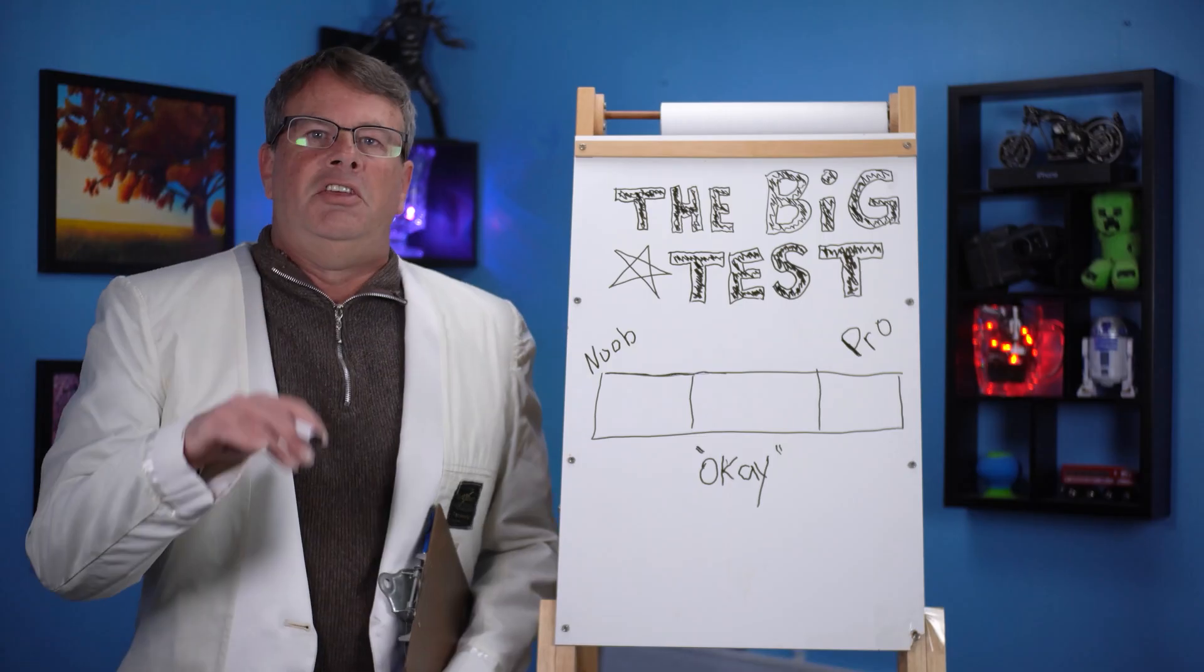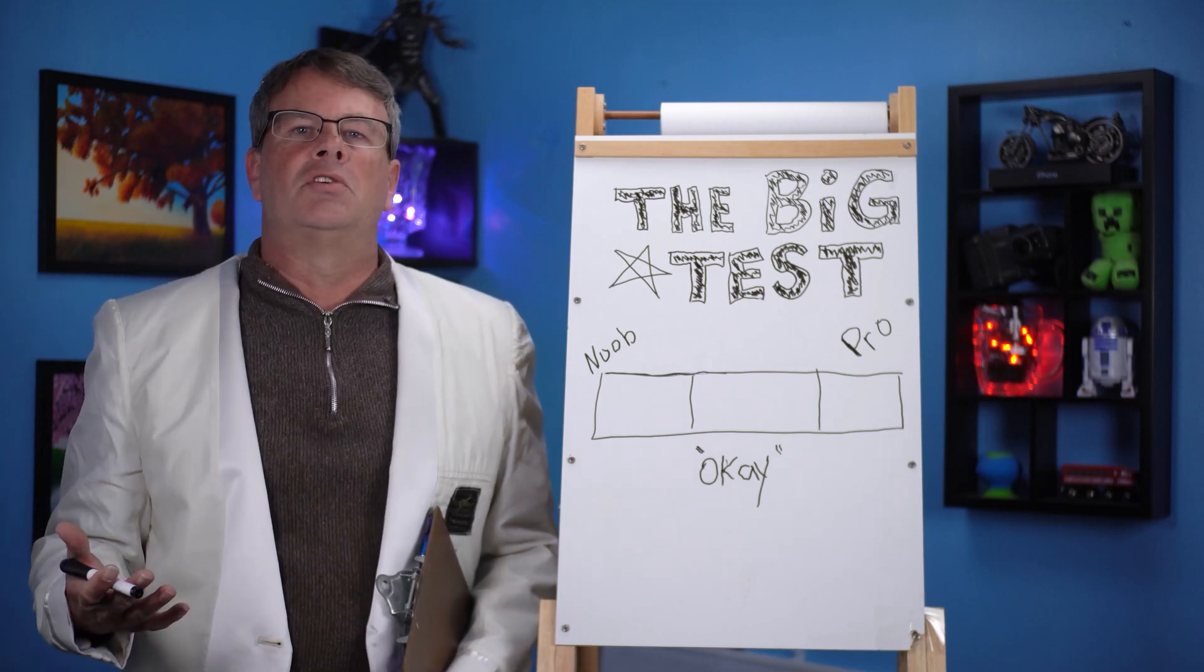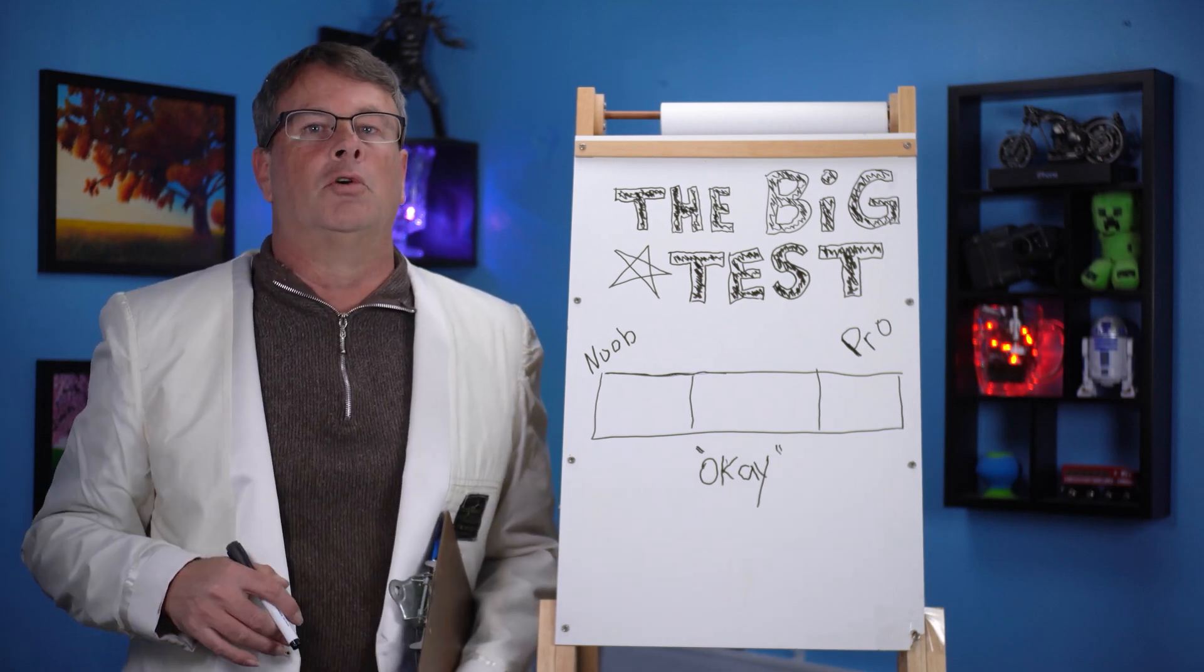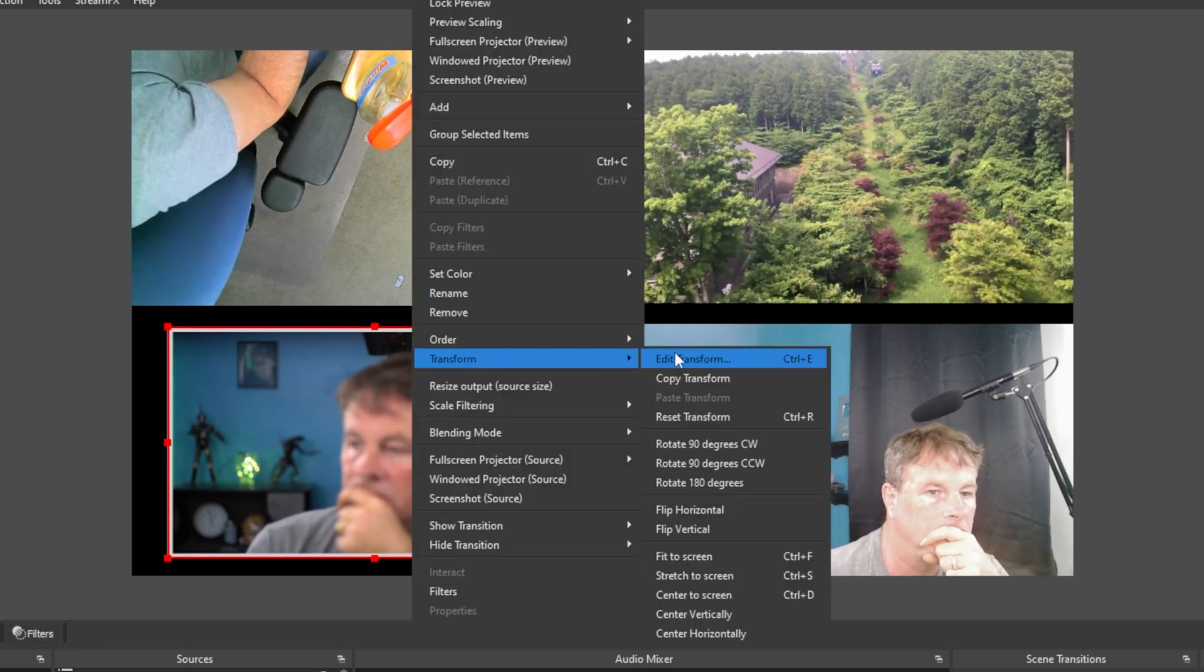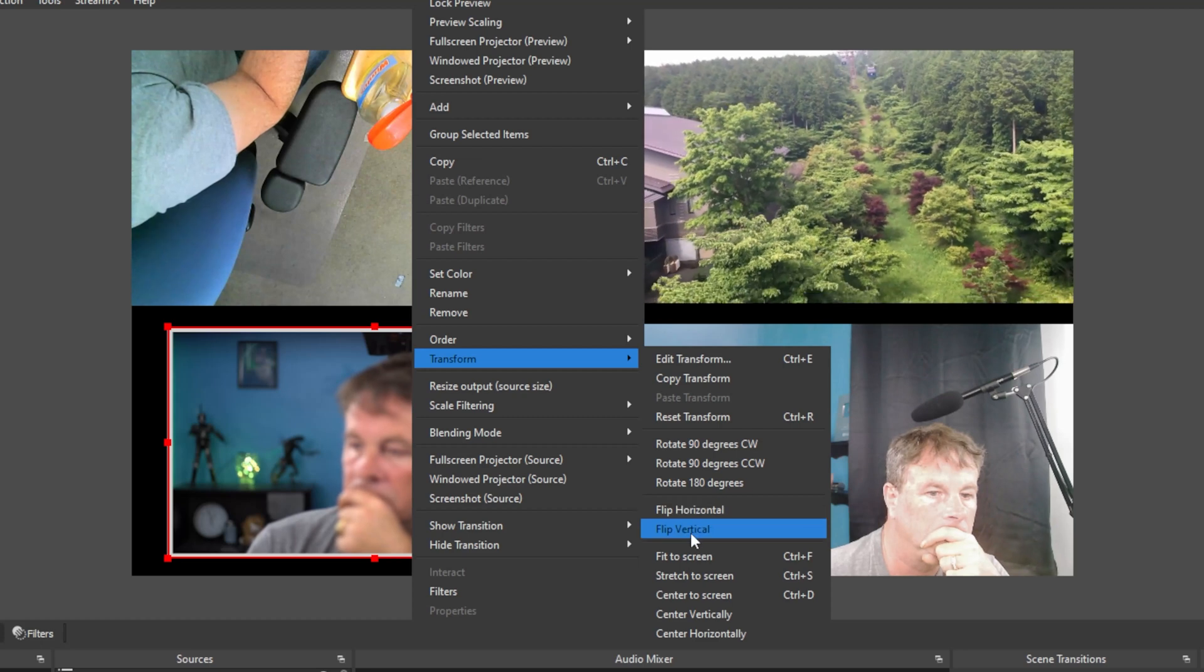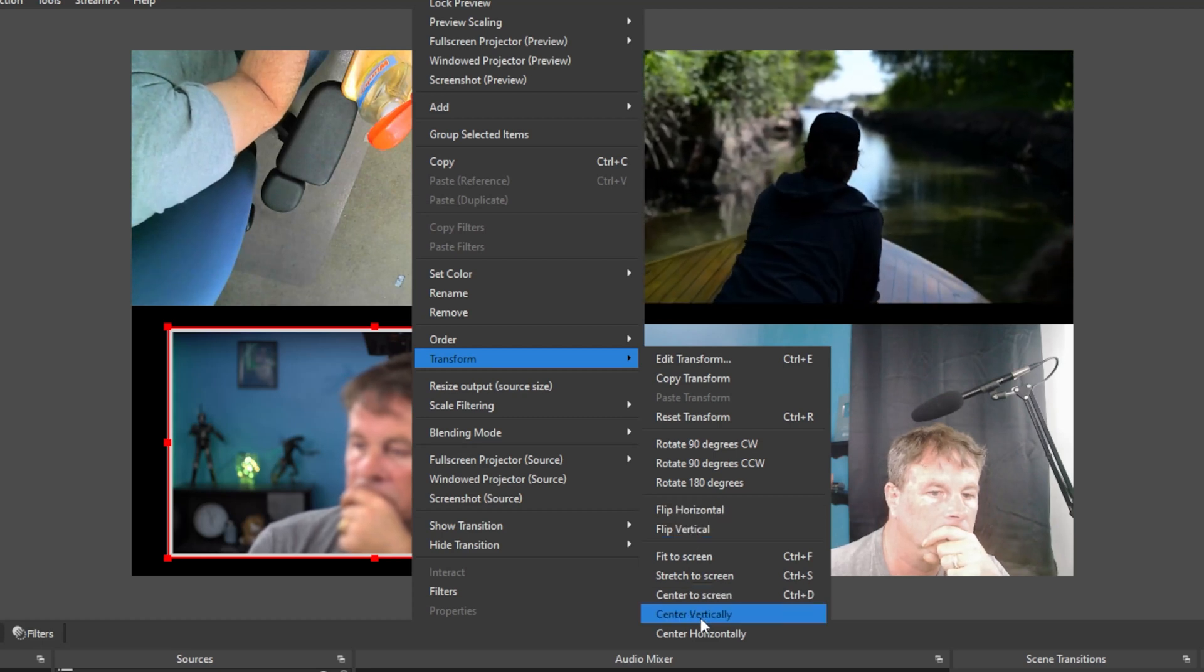But we can't just stop there, right? You can also right-click on any source in the window and do all sorts of cool things. When you right-click it in the preview and go to Transform, you can reset any crop or scale, flip sources, rotate it, or even center a source.